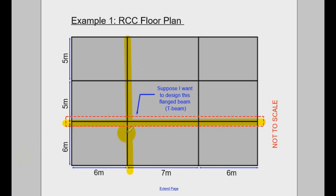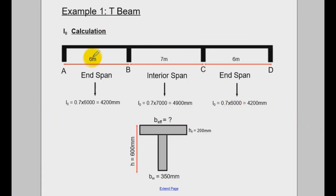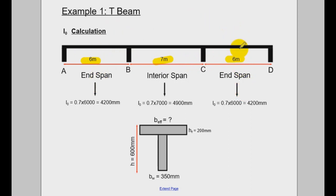So that we can work out the flange width. If you just take a longitudinal cross-section along this beam, what you'll get is something like that. So you have the span here, and here, and here. This is an end span, as well as this one here, and this is an end span.